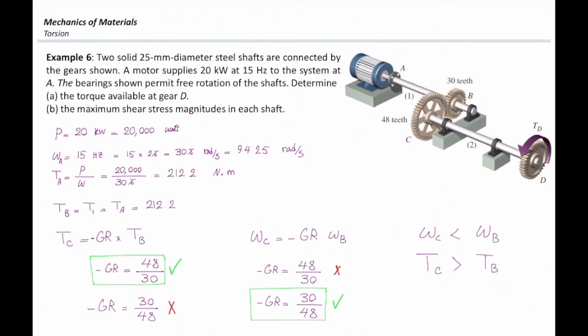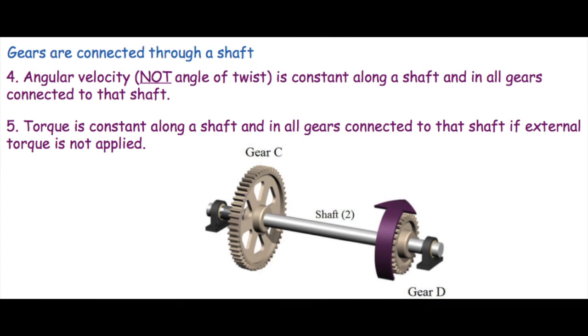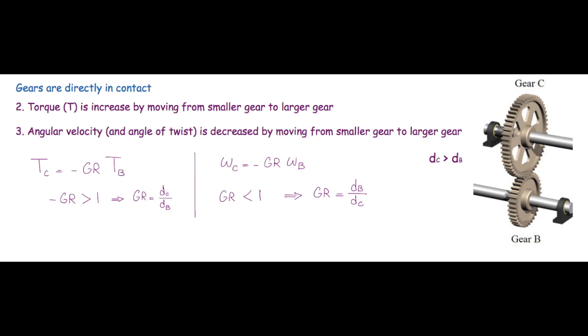Everybody understand this? So, we have learned two facts. First, if you move along a shaft, torque and angular velocity remains the same. But, if you move from two connected gears together, both of them are changing. What is the gear ratio for that case? The angular velocity in the larger gear is smaller. But the torque is higher. Based on this fact, I can pick up what is the correct gear ratio.